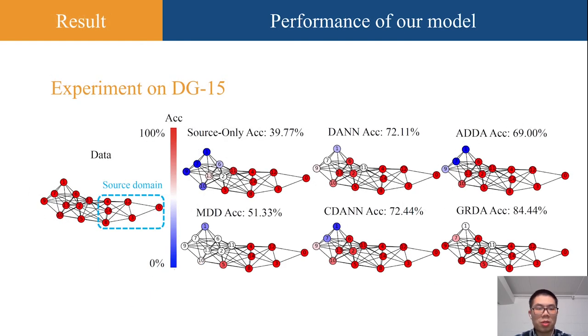Our experiments support our statements. On dataset DG-15, our model has a large gap with other models for at least 10% accuracy improvement.